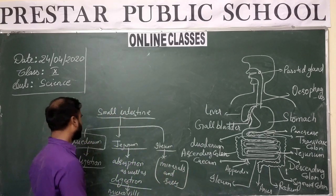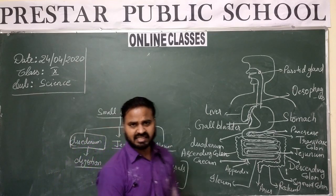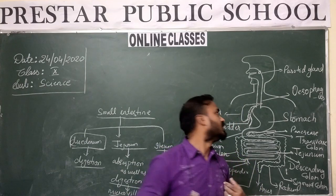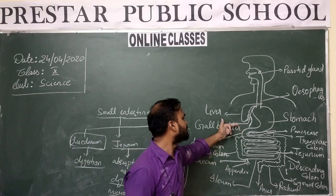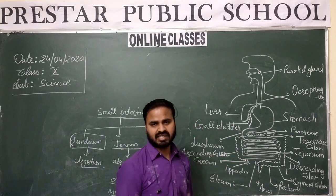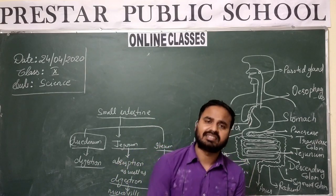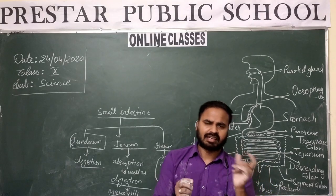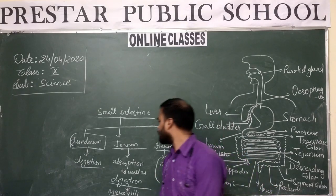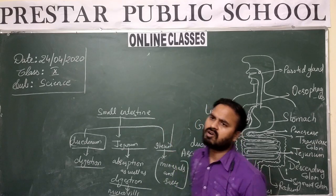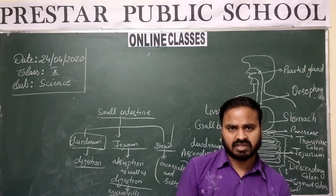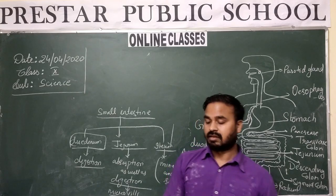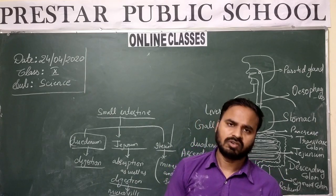Through microvilli, all small particles are absorbed. Minerals and salts are also absorbed in the ileum. So today we have discussed the small intestine up to the ileum, pancreatic juice functions, bile juice functions, hormones, and the difference between exocrine and endocrine glands. We will discuss the large intestine and remaining parts tomorrow. Thank you.